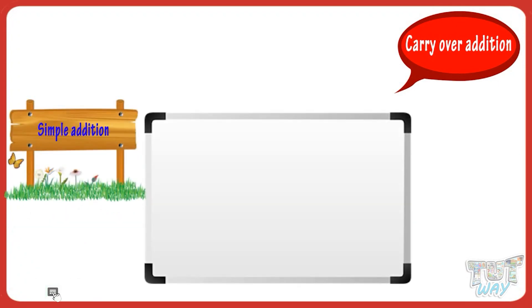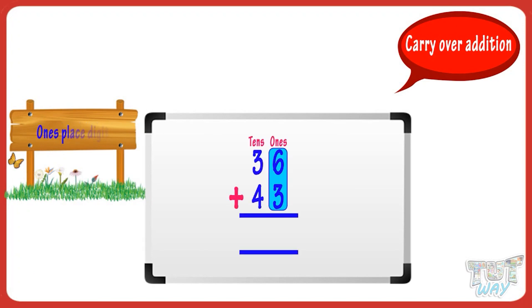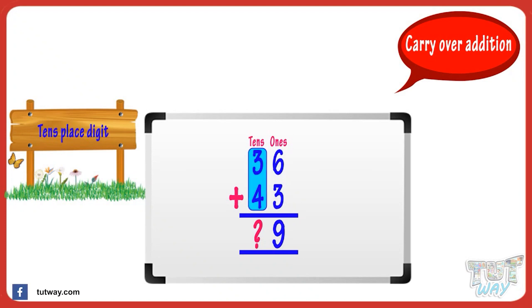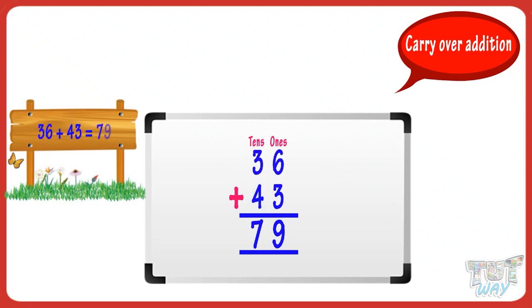Here is another example. First of all, add the ones place digits and write the sum below the ones place digits. Now add the tens place digits and write the sum below the tens place digits. We get 36 plus 43 equals 79.